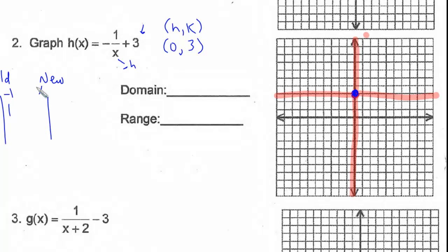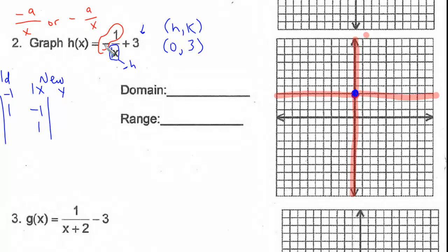Let's figure out what's happening to x and y in this graph. To find the changes in x, we look at what's being multiplied to x. There's nothing out front being multiplied to x except a 1, so x values do not change. The y values are on the outside of the function. Since the negative sign is to the side and not underneath the division symbol, it is with the y. So we multiply all the y values by negative 1: negative 1 times negative 1 is 1, and negative 1 times 1 is negative 1 — essentially all the signs change.